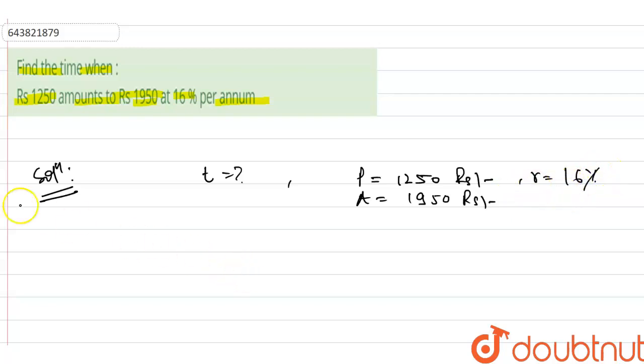Now guys, try to understand one thing. This amount is given, principal is given. So as we know that amount equals principal plus simple interest.